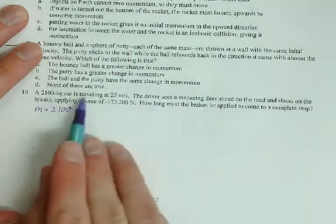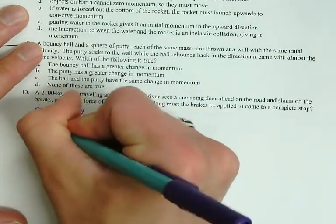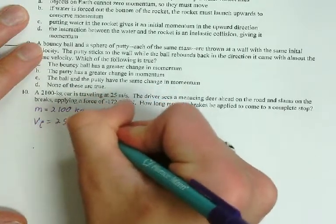We have a velocity that he's traveling. That's going to be an initial velocity because it's what's happening at the beginning of the problem, 25 meters per second.